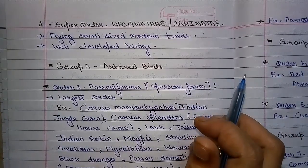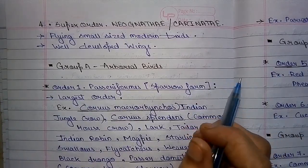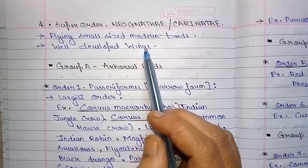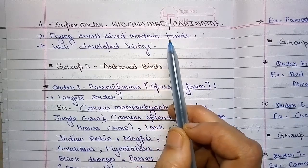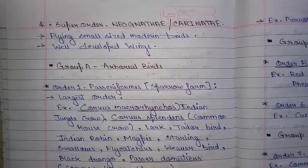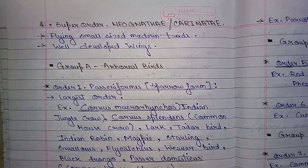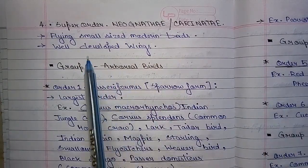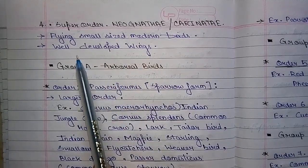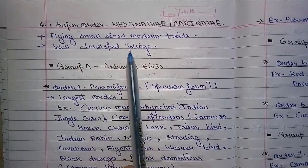Let's see the last super order, that is Neognathae. They are modern birds. They can fly. They are of a small size and they have well-developed wings.